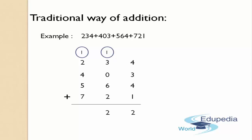After carrying, we start adding the digits in the hundreds place. 7 plus 5 is 12, 12 plus 4 is 16, 16 plus 2 is 18, and 18 plus 1 is 19. Now there are no more columns after the hundreds place, so we write 19 directly in the answer's place. The answer after adding these numbers is 1922. This is the traditional, old-fashioned way of doing addition of numbers.